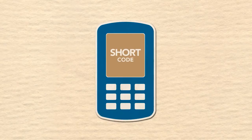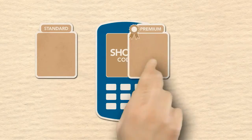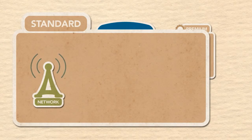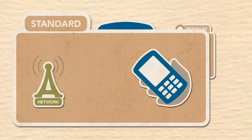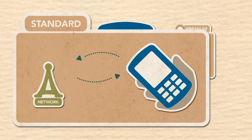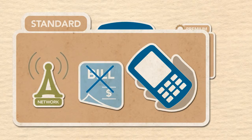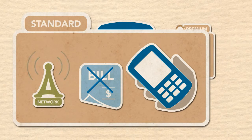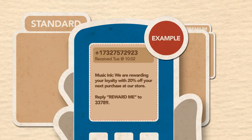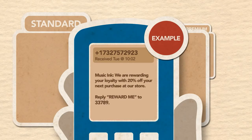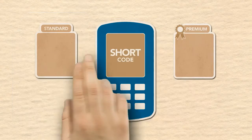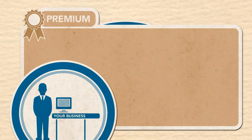There are two types of short codes: standard short codes and premium short codes. Standard short codes work across all major mobile operators, and mobile users receiving or sending messages to standard short codes are not charged any additional fees. Here is an example of a message with a standard short code.